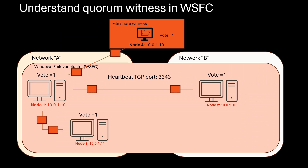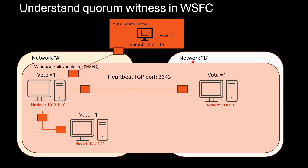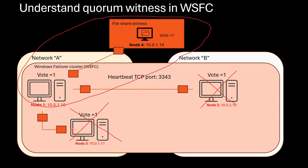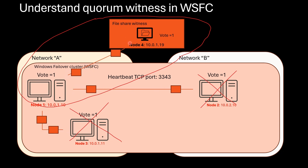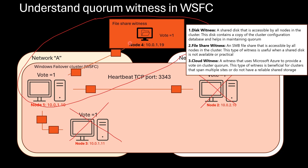Now let's talk about witness. Quorum witness is just another vote. If you cannot add nodes to increase votes, you can configure a witness. In this case, the number of votes in the cluster becomes 4. If node 2 fails and then node 3 fails, the primary keeps alive because two votes will be left. In other words, witness increases the chance of cluster survival. There are three types of witness: disk witness, file share witness, and cloud witness.